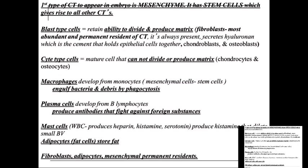Plasma cells develop from B lymphocytes and produce antibodies. B lymphocytes evolve into plasma cells that produce antibodies to fight against foreign substances. These antibodies are called immunoglobulins — IgA, IgG, IgM, and IgE.